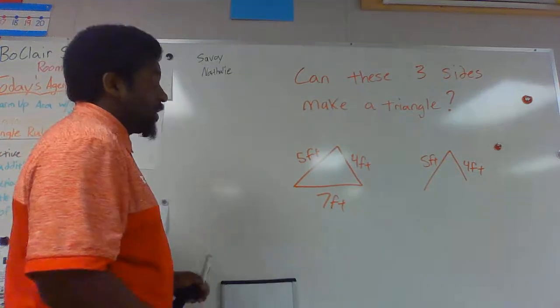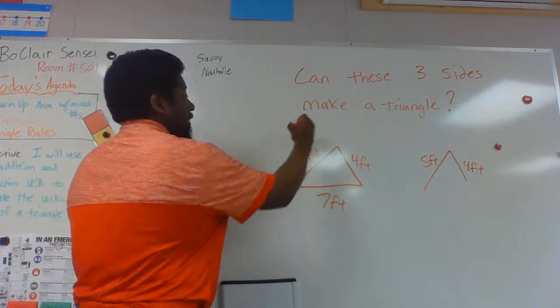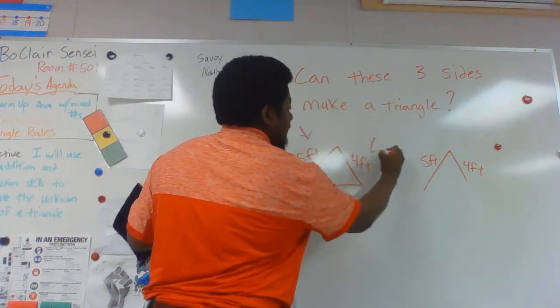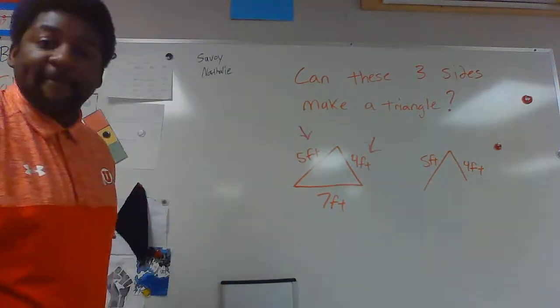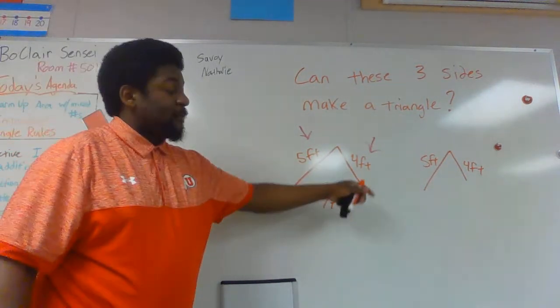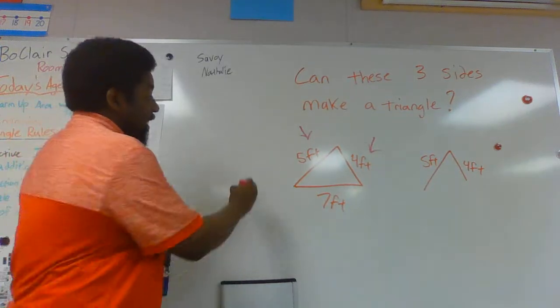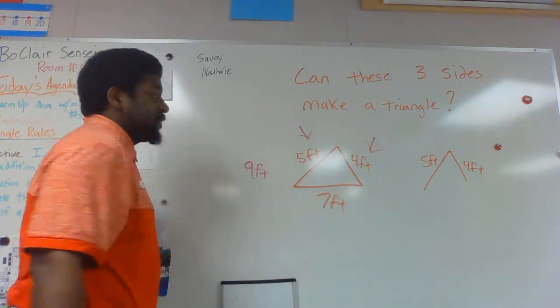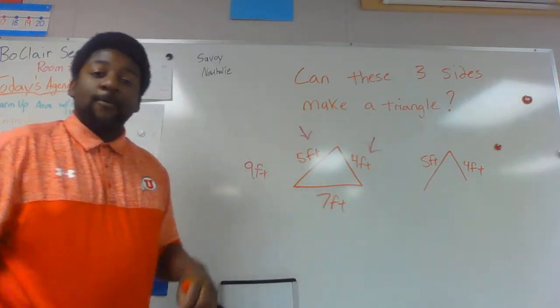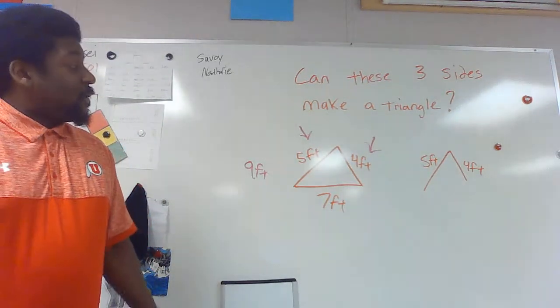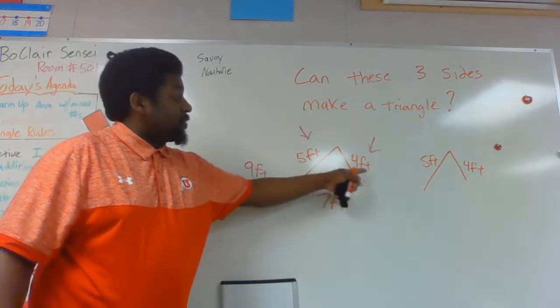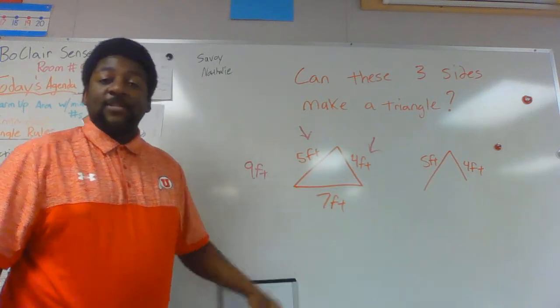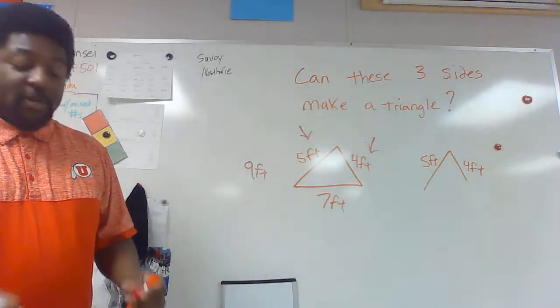The two smallest sides of this triangle are going to be 5 feet and 4 feet. When I add 5 feet and 4 feet together, that makes 9 feet, and since 9 feet is greater than 7 feet, these will make a triangle. If these two small sides are not bigger than the third side, it will not make a triangle.